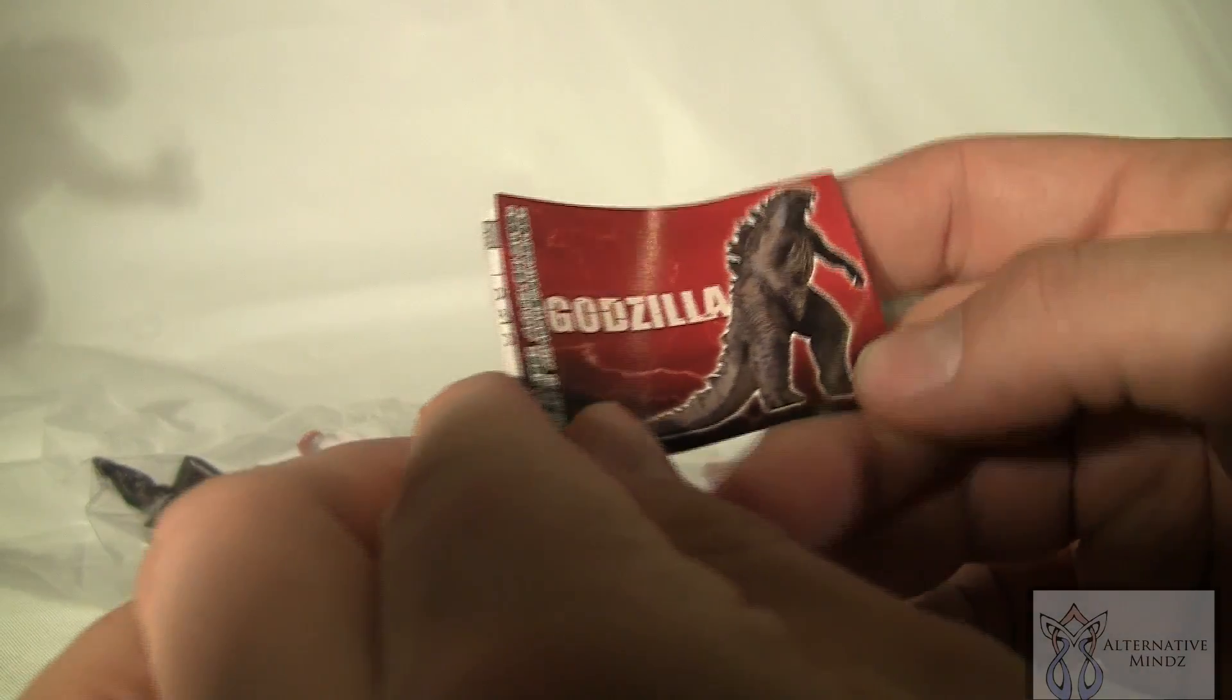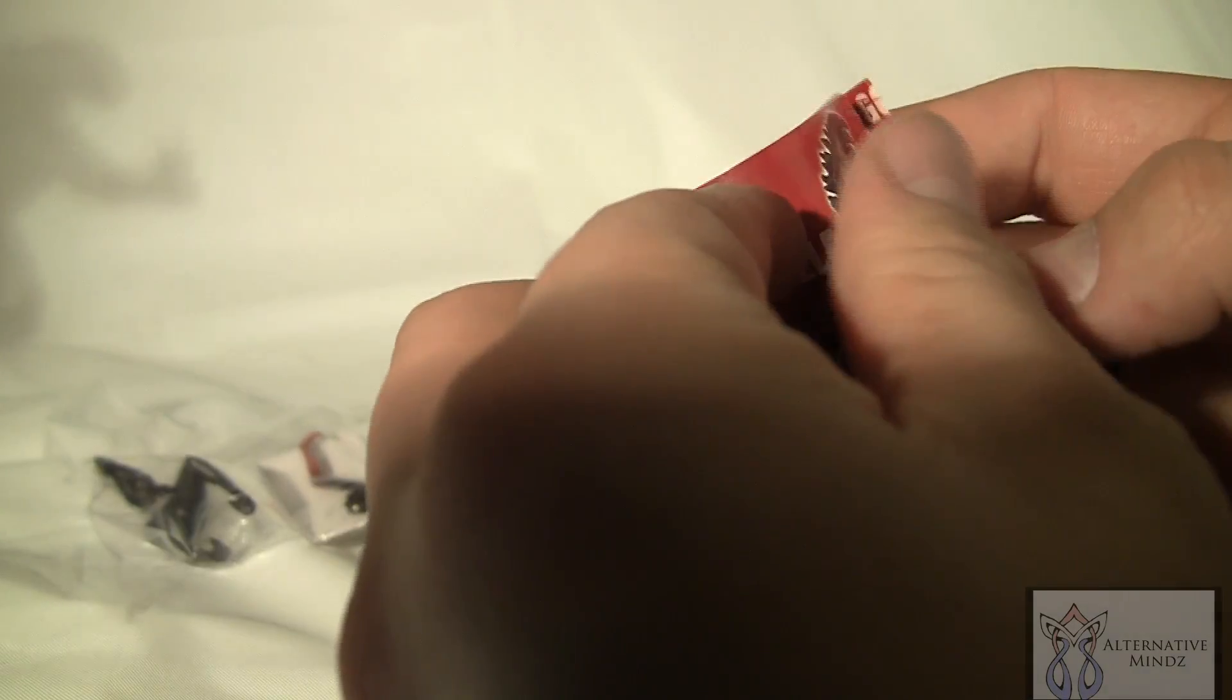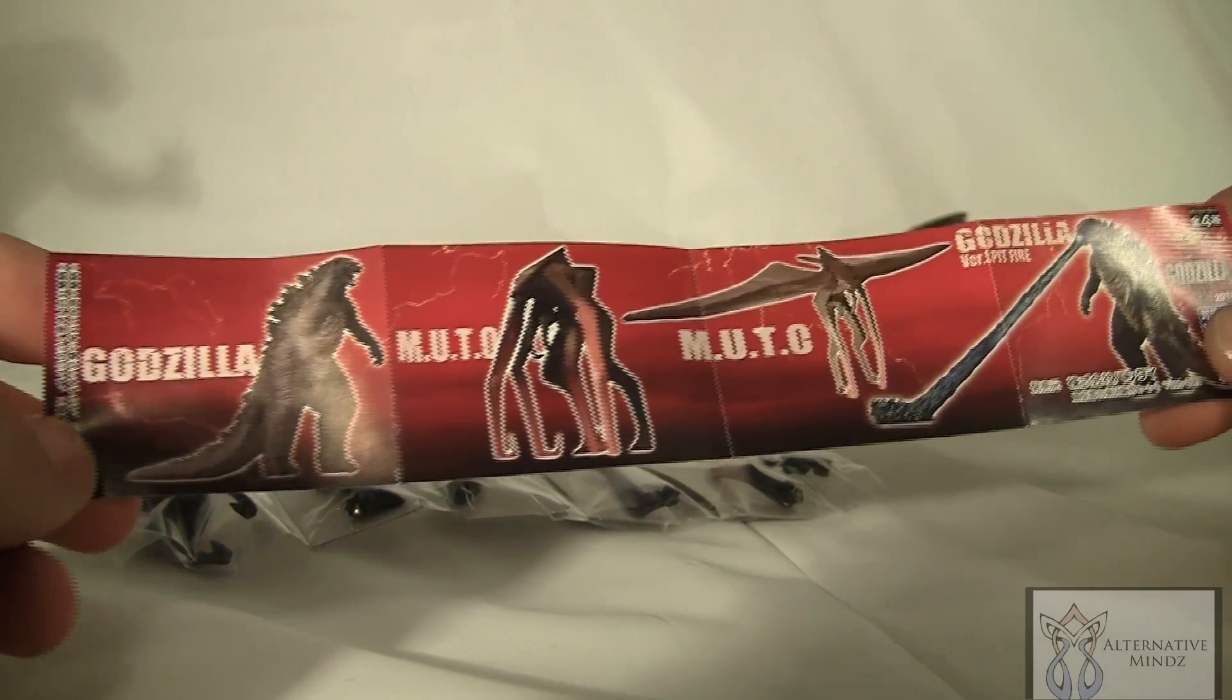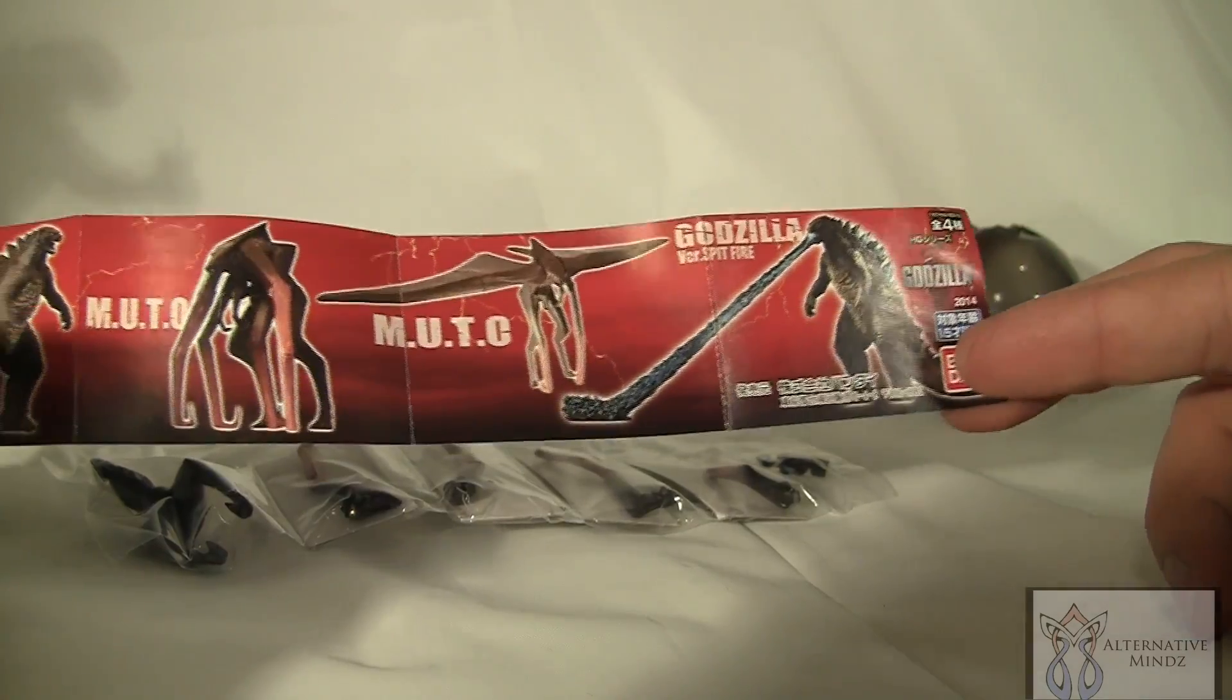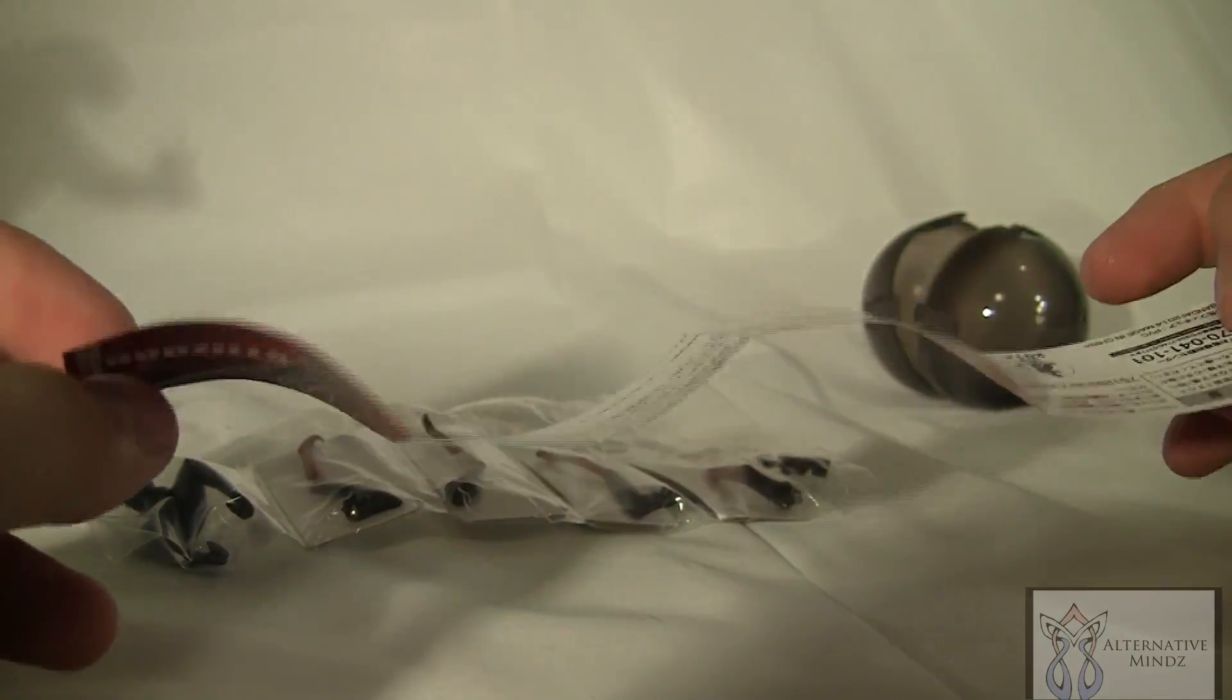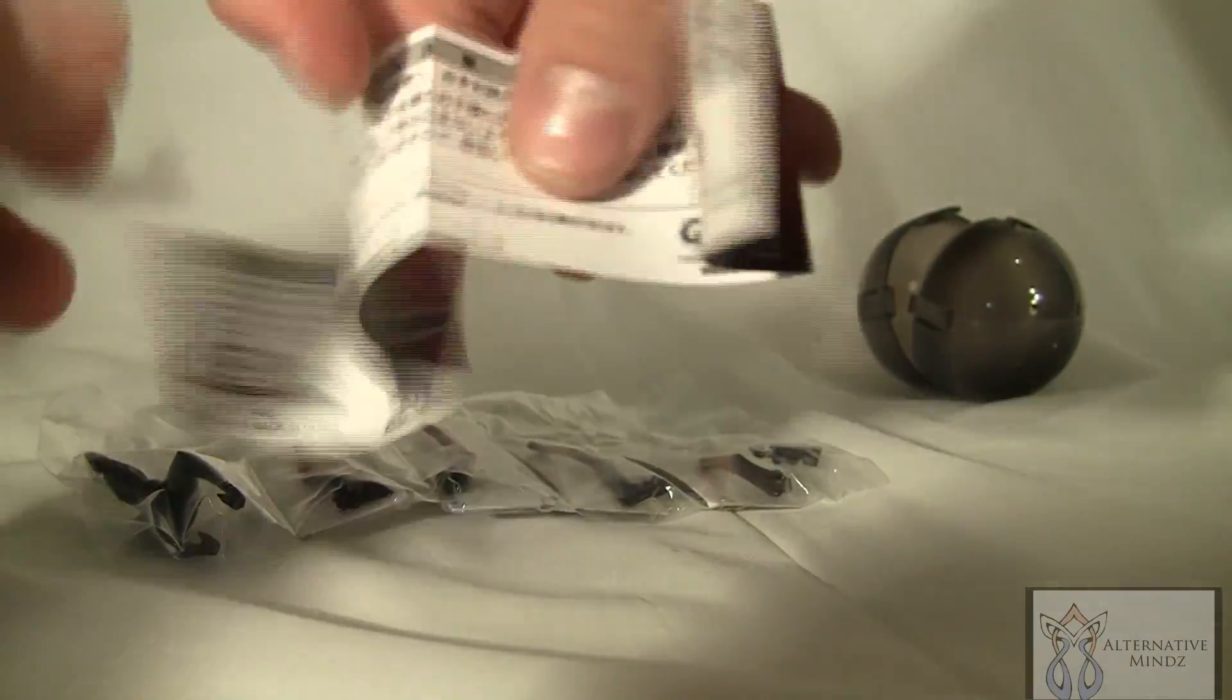You can see the pamphlet over here. The Godzilla pamphlet. This is supposed to be a 2014 Godzilla film. And you have the Godzilla, the Mutu, the other Mutu and Godzilla Spitfire version, which would be really quick yet. It's Bandai. And the legal jargon on the back.